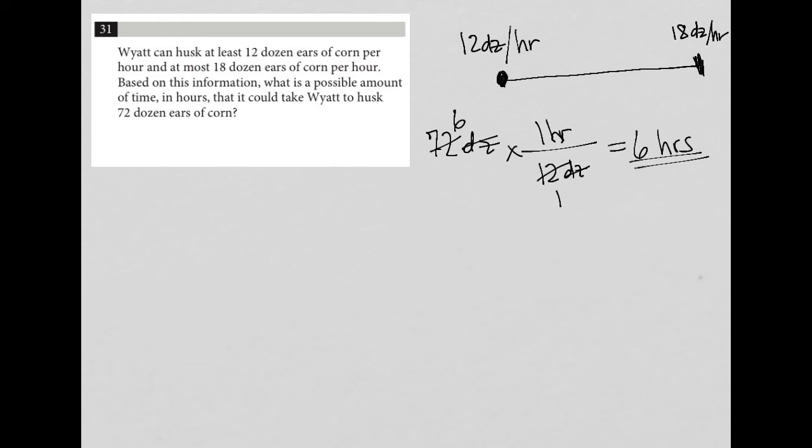Six hours in order to husk 72 dozen ears of corn. And because we're looking for just a possible amount of time, six is a perfectly good answer. So that should work for you.